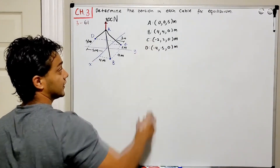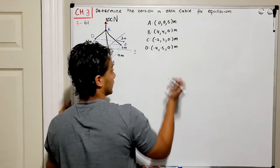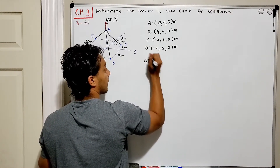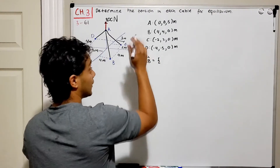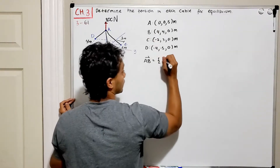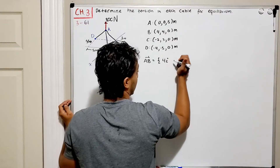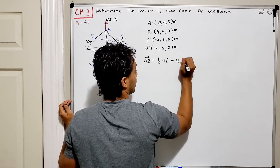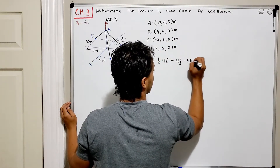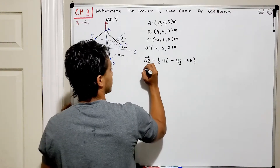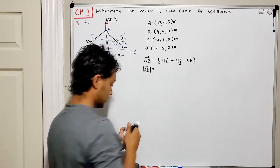Now we'll find the vectors. Starting with vector AB: AB equals B minus A, so we get four minus zero in the I direction giving four, four minus zero in the J direction giving positive four, and zero minus five in the K direction.